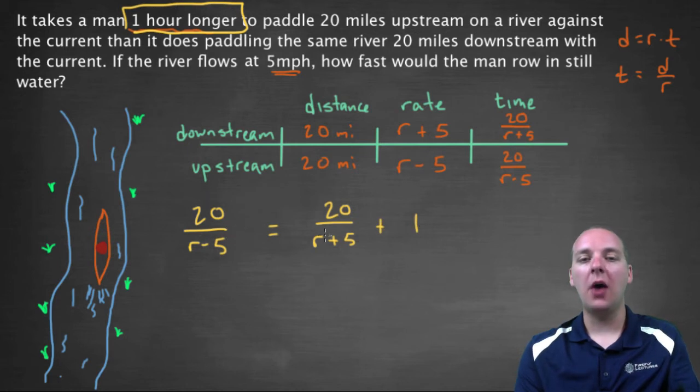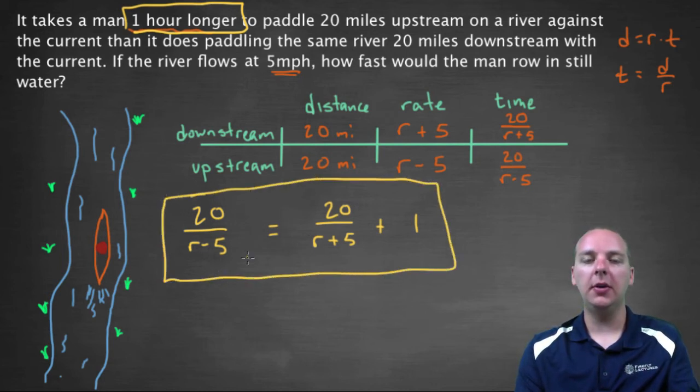Right, because it was 1 hour longer going upstream than it was going downstream. So just to make up some numbers, if it took us 4 hours to go downstream, and I made that number up, then plus 1, that means it would have, that would have been equal to 5 hours going upstream. Okay, 4 hours downstream, 5 hours upstream, or something like that. So, great! We have a rational equation right here.